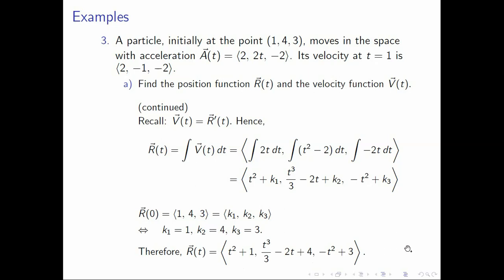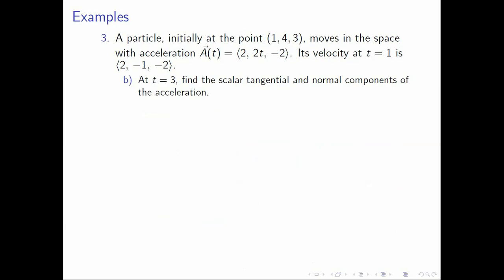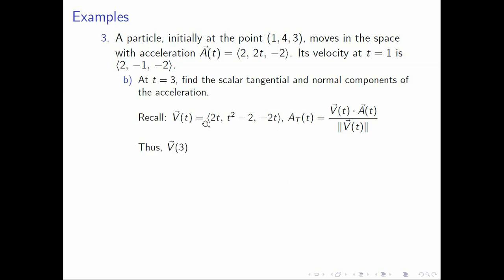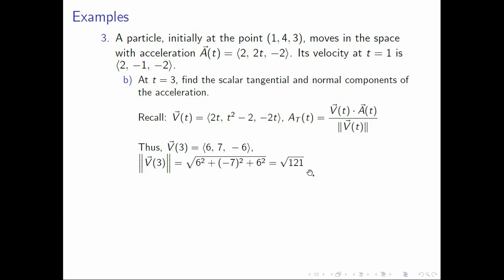That completes letter A. Let's move on to letter B. We want the scalar tangential and normal components of acceleration at t=3. Starting with the scalar tangential component, let's compute v(3). From our velocity function: first component is 6, second is 3² - 2 = 7, third is -6. So the magnitude of v(3) is the square root of 36 + 49 + 36 = square root of 121, which equals 11.